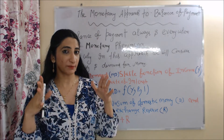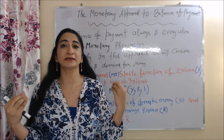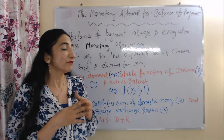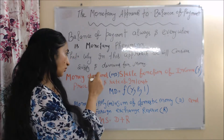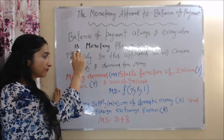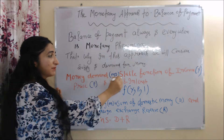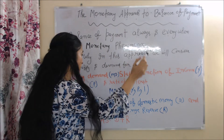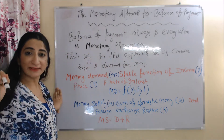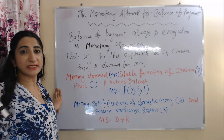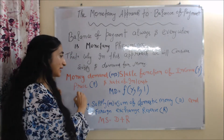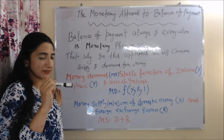That's why in this approach we will consider supply and demand for money. Firstly, we will talk about demand for money. Demand for money is a stable function of income, price, and rate of interest.